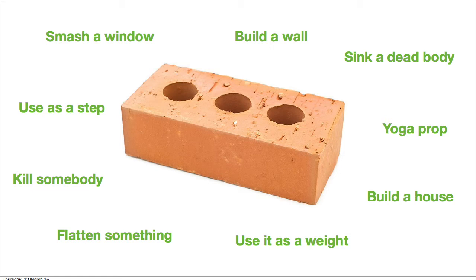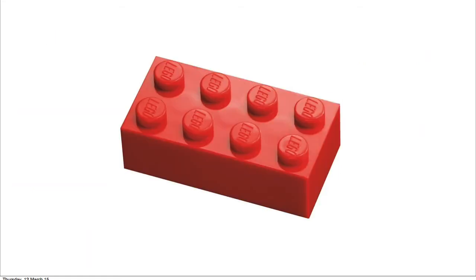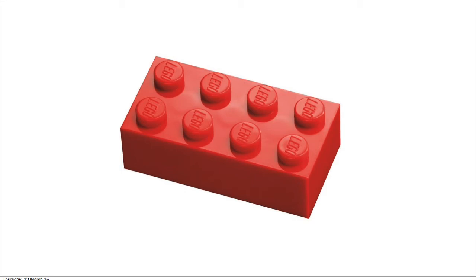Then I'd say: OK, do the same exercise again, but this time think like you're four years old — or whatever age you're aiming to design for. By thinking like a four-year-old, you'd probably think of a different kind of brick — a Lego brick or a Duplo brick, something a bit more playful. And the things which come out in the next minute are very different: it could be a worm house, a doll's house, you'd use it as a goalpost, a seesaw, you'd look through it, care for it, paint it, put eyes on it. It's really just changing the perspective on this object. You can use any object to do this — I've just used a brick, but literally you could use anything.